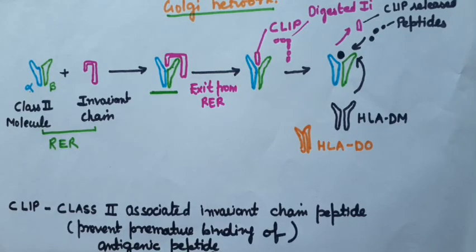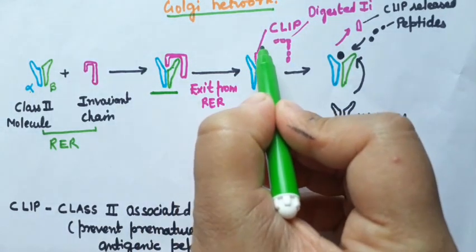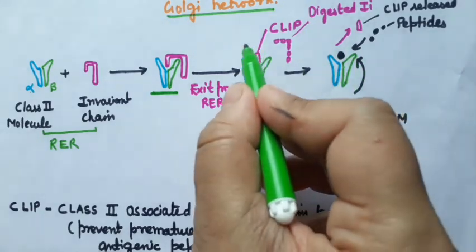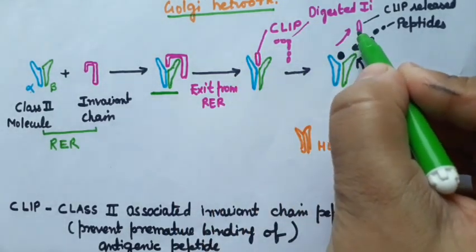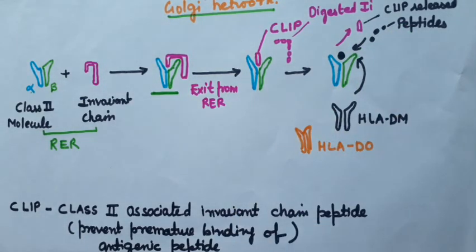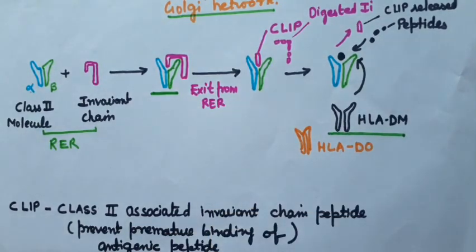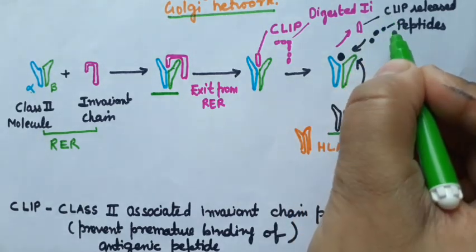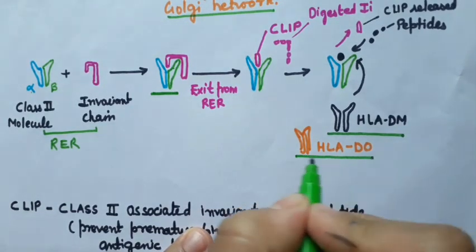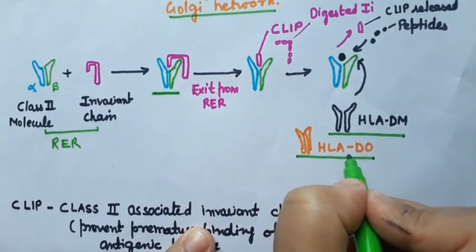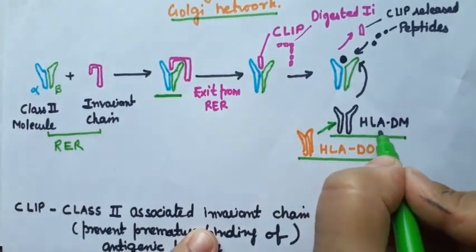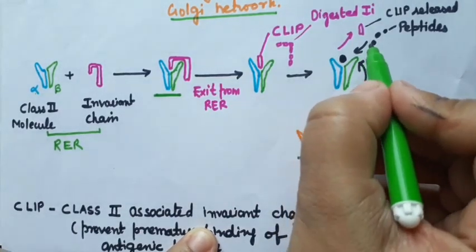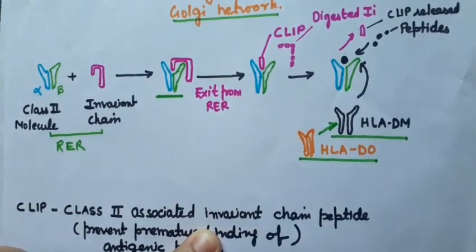CLIP stands for class 2-associated invariant chain peptide. It helps in preventing premature binding of antigen peptides to the MHC class 2 molecule. When the lysosome combines with the whole molecule, CLIP is removed and peptides bind to the peptide binding site with the help of the non-classical MHC class 2 molecule HLA-DM. Another non-classical class 2 molecule, HLA-DO, inhibits HLA-DM so that the peptide exchange does not occur, whereas HLA-DM helps in the exchange of CLIP and facilitates binding of peptides to the peptide binding site.